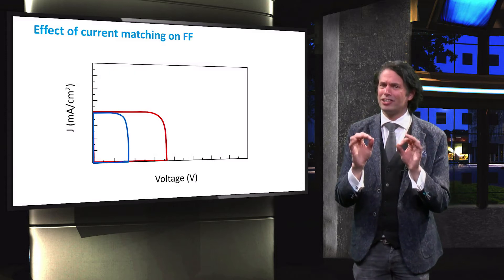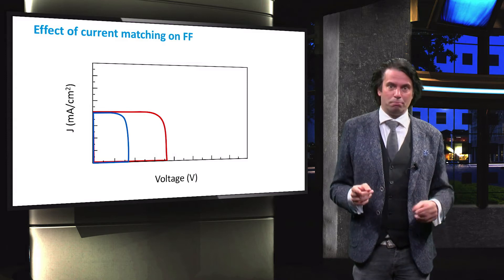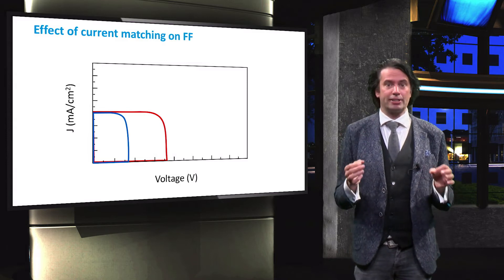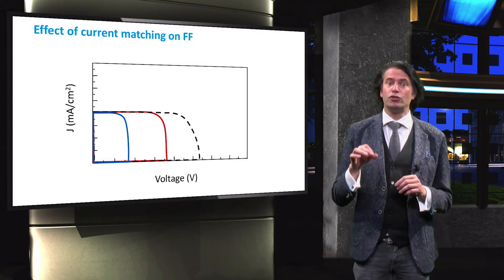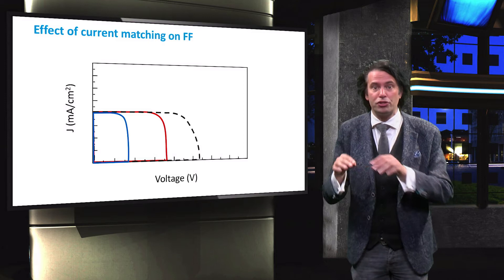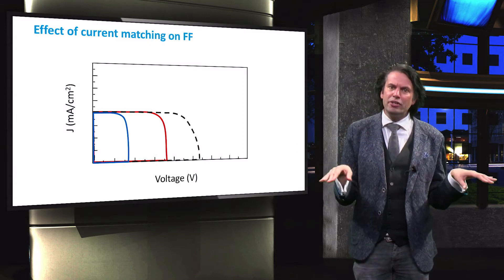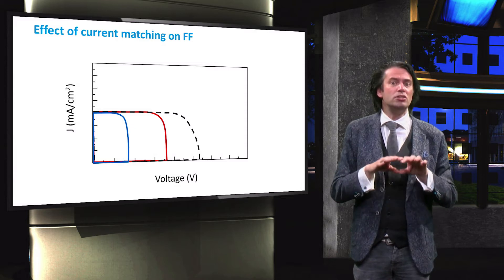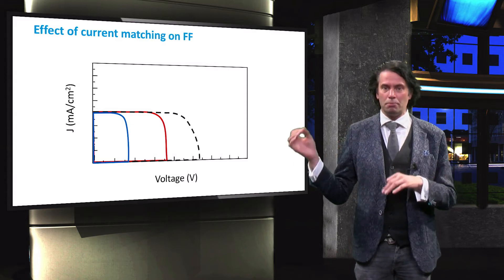Now let's consider the situation in which both cells are current matched. Both cells operate in the exact same current range. This means that the fill factor of the top cell and bottom cell play an important role in the shape of the final JV curve. As a result, the knee around the maximum power point becomes dull in comparison to the bottom and top cell limited conditions.